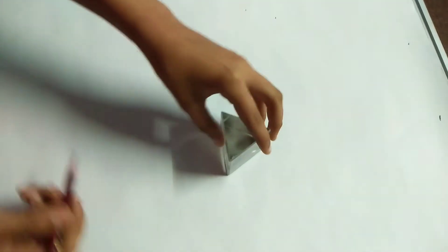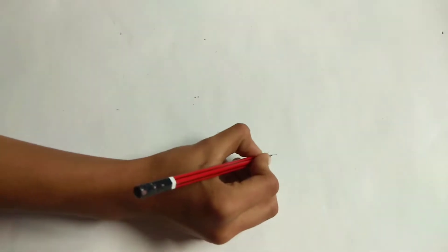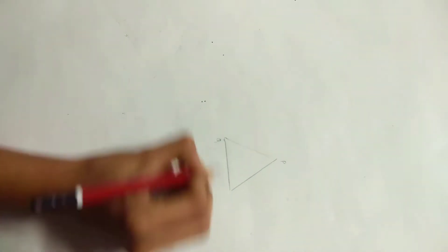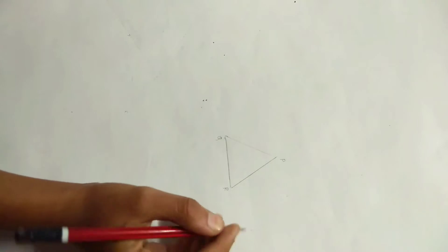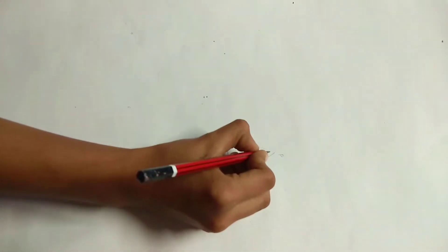Remove the prism. It is an equilateral triangle. Name its vertices as P, Q and R. The angle between PQ and PR is angle of prism and it is denoted by A.